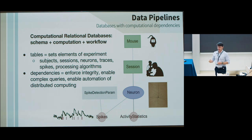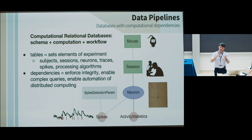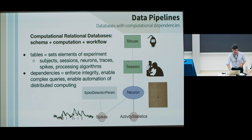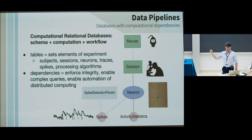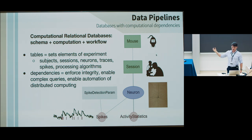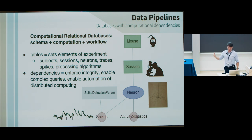The main advantage of DataJoint is that we can take students who are not computer scientists and reduce it down to principles we can teach — students and postdocs become database programmers and database experts for computation. In relational databases, data are represented as tables. Each table has a specific meaning corresponding to something in your experiment. For example, one table might be called 'mouse' and contains mice; the next could be a recording session, then a neuron, then spike detection parameters or algorithms that produce spikes and activity statistics.